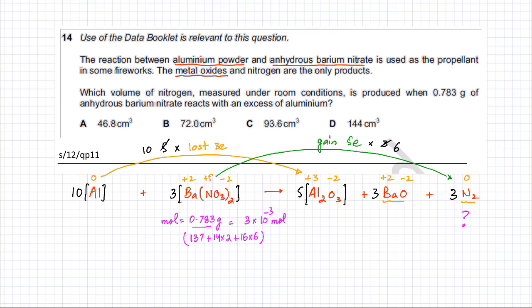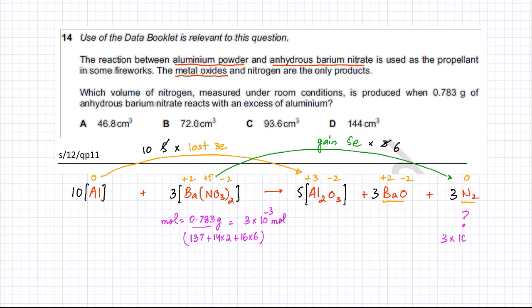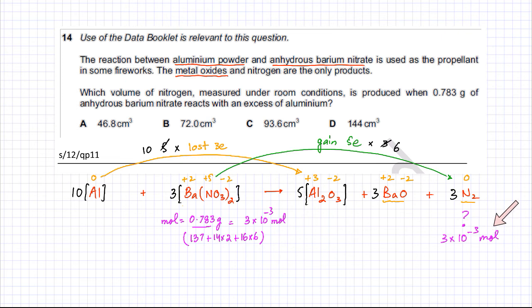Looking at the balanced equation, 3 barium nitrates produce 3 N₂ molecules — the ratio is 3:3, which is 1:1. So the moles of nitrogen are exactly the same: 3 × 10⁻³ moles. The next part is to find the volume of nitrogen gas. Volume of gas = moles × molar volume.